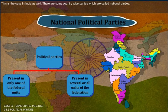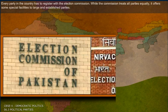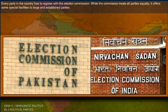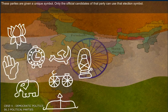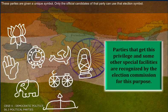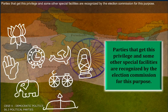There are some countrywide parties which are called national parties. Every party in the country has to register with the Election Commission. While the commission treats all parties equally, it offers some special facilities to large and established parties. These parties are given a unique symbol, and only the official candidates of that party can use that election symbol. Parties that get this privilege and other special facilities are recognized by the Election Commission.